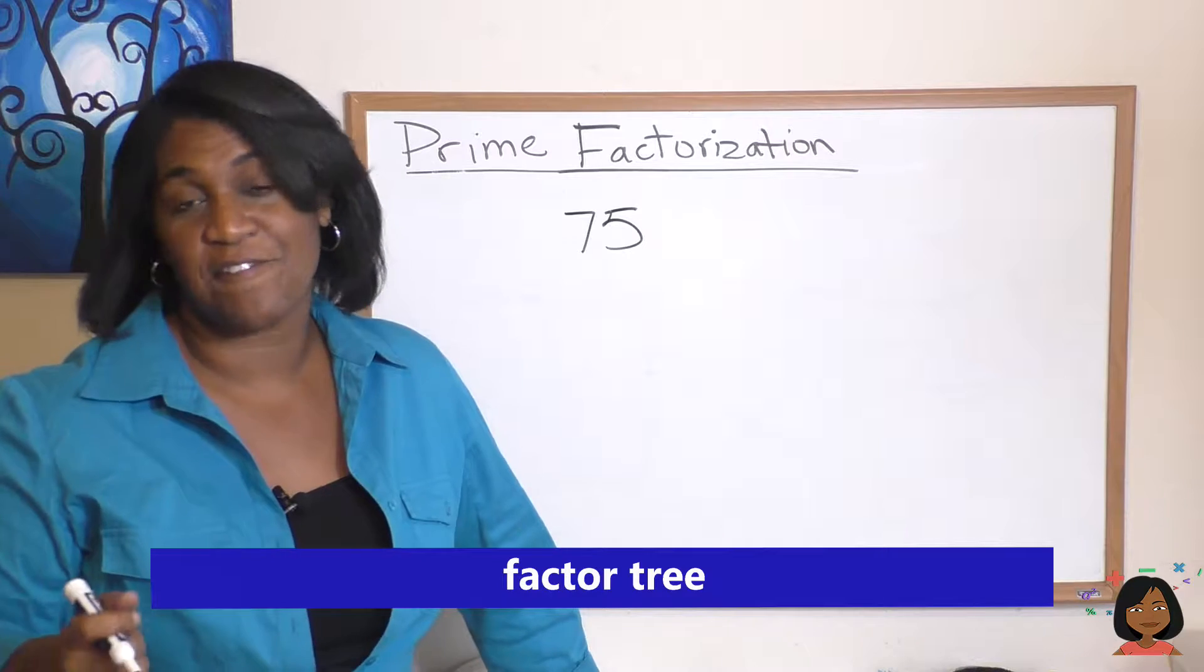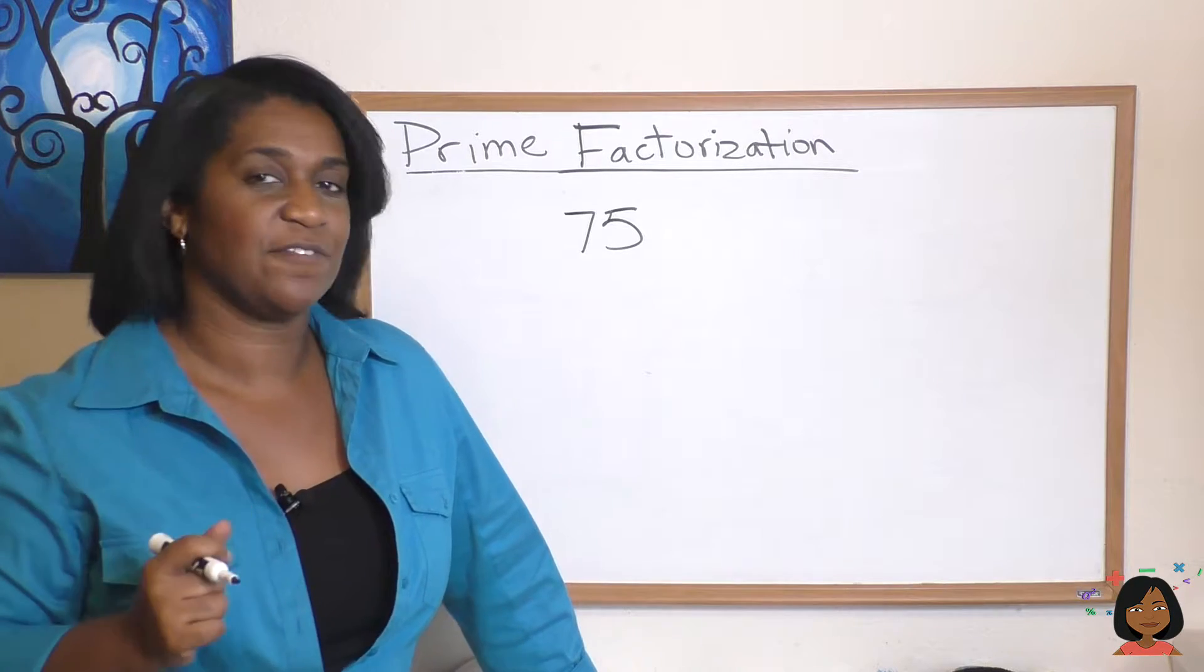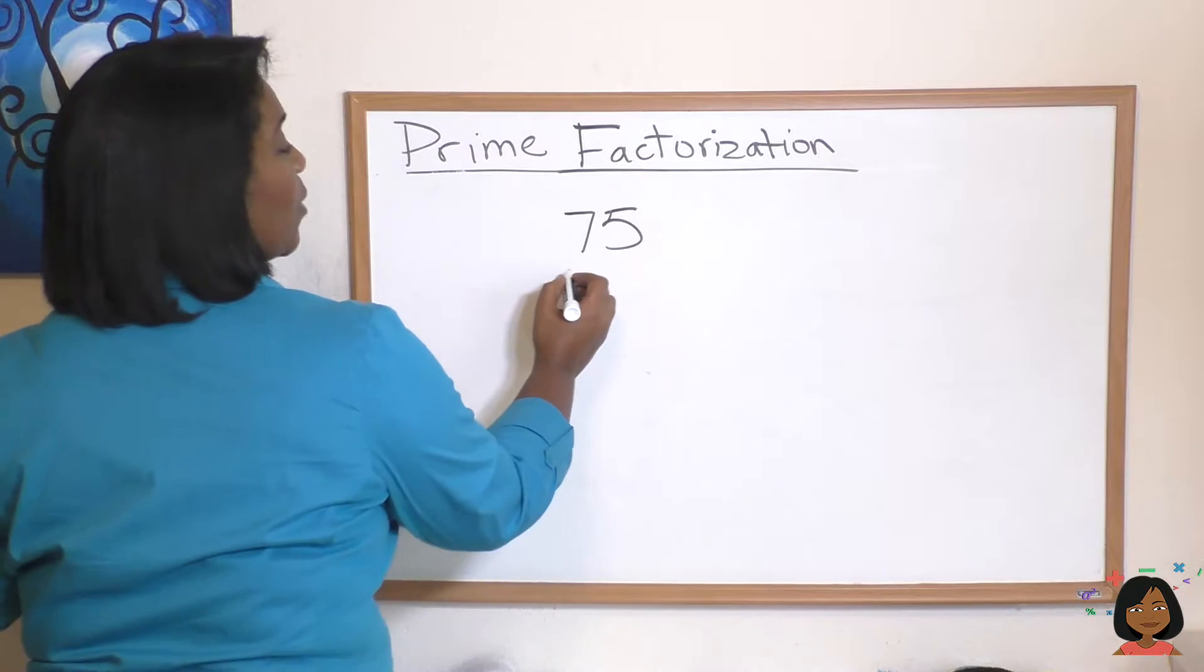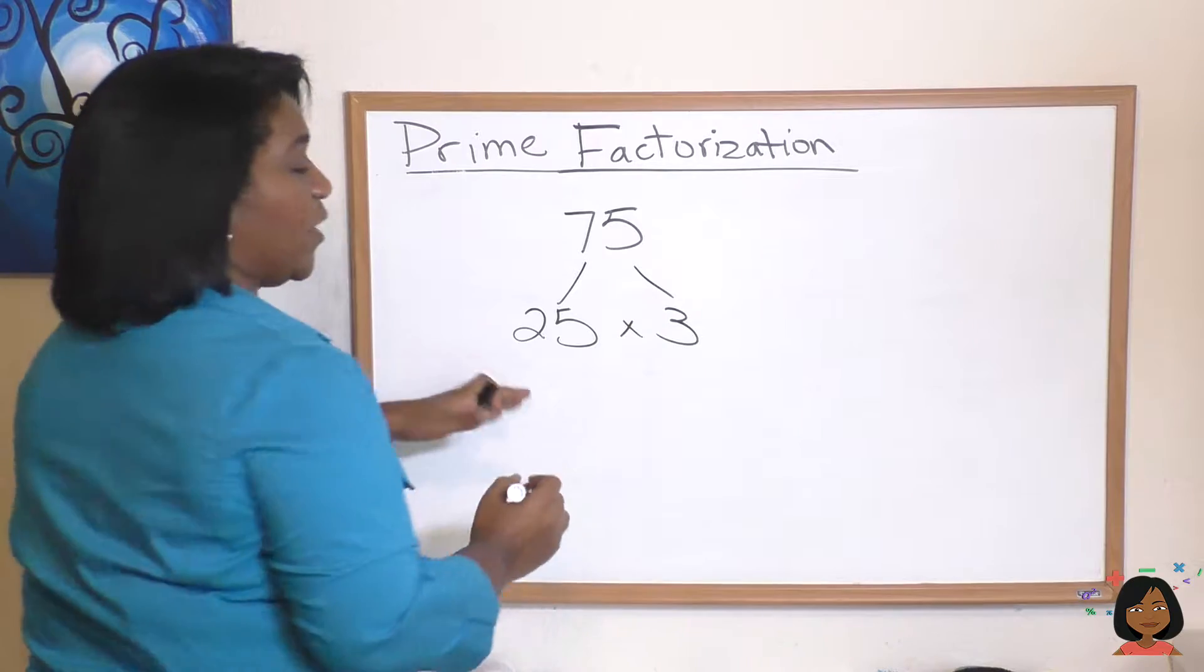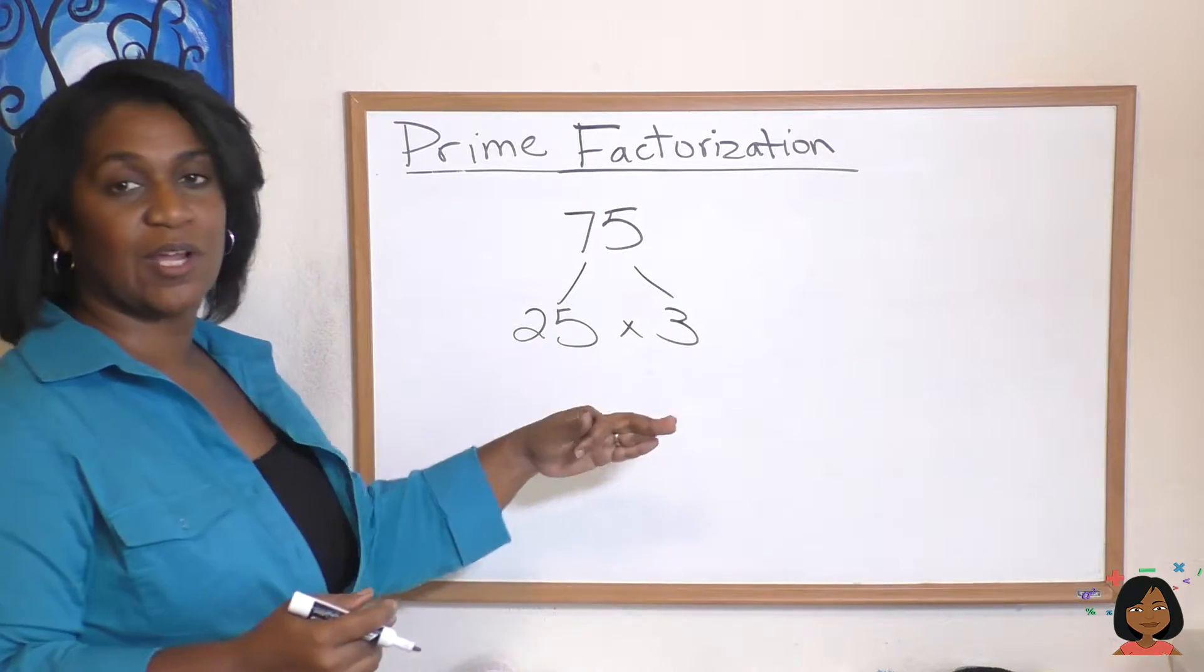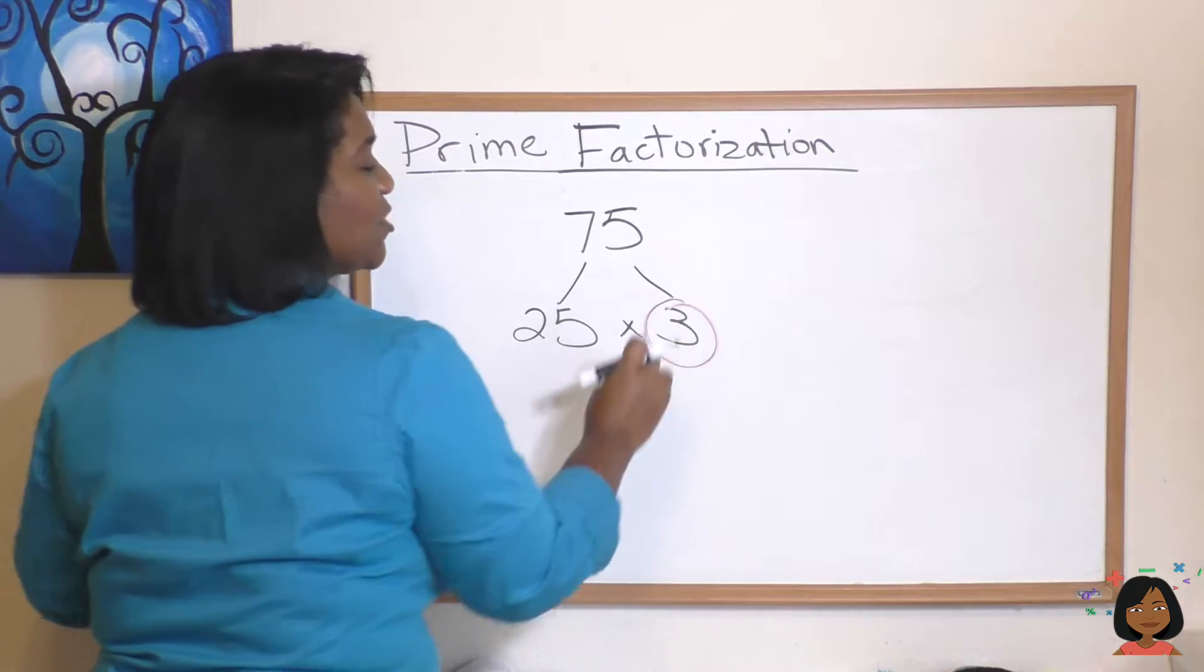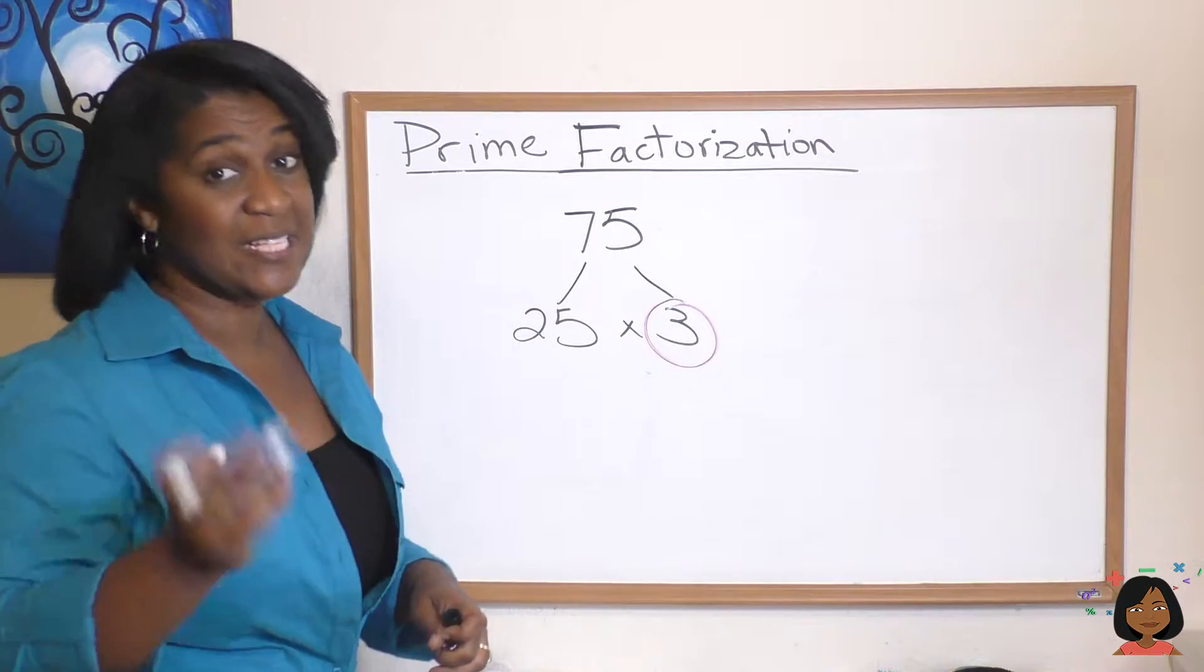I have a number here 75 and we're going to look for the prime factors that make up 75 and you just start with numbers that you know when multiplied together equal 75. So I'm going to start with the number 25 and 3. 25 times 3 is 75. Now here I stop and take a look and I say are any of these numbers prime? And we do have a prime number. The number 3 is prime. So I don't have to deal with this number anymore.